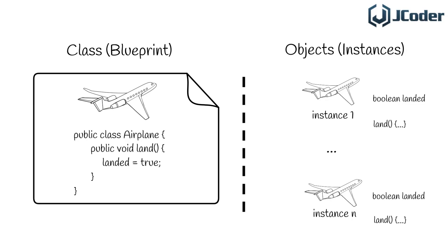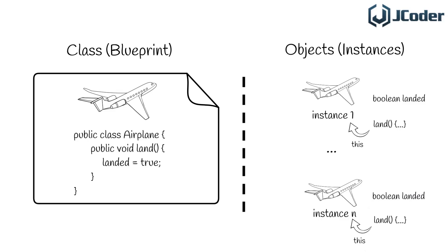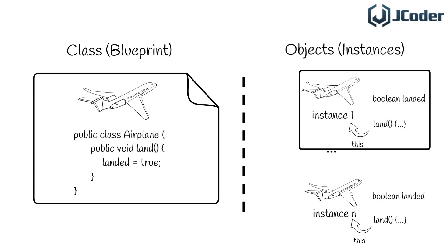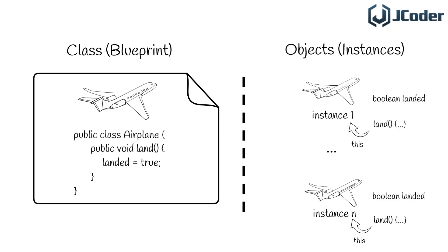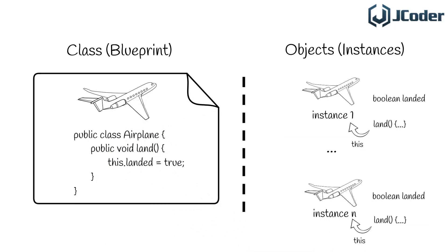Now this topic lends itself to introducing the concept of the this reference in Java. If we go back to the example of our non-static methods, recall that each instance of our airplane class would have its own version of the method. In non-static methods, Java provides a variable or reference called this, that points to the object that the method belongs to. We can use that variable anywhere inside a non-static method. So the this reference that belongs to the land method of the first airplane object points to the first airplane object. In our case, this means the code for our land method is equivalent to writing: public void land, and in the method body: this.landed = true. Both versions of the method are equivalent. We will see common use cases of the this reference in later videos.